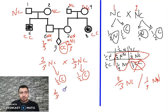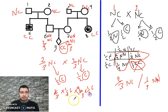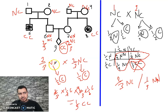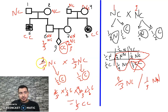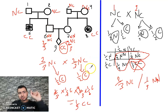The calculation is: 2/3 (probability parent 6 is NC) × 1/2 (probability of passing C) × 2/3 (probability parent 7 is NC) × 1/2 (probability of passing C) = 2/3 × 1/2 × 2/3 × 1/2 = 4/36 = 1/9 CC. So the risk for child 9 to be affected is 1/9.